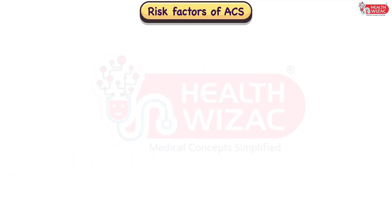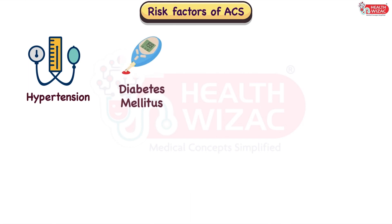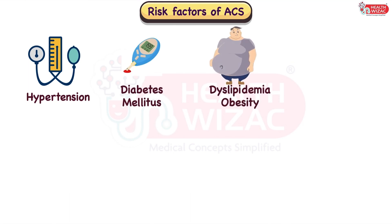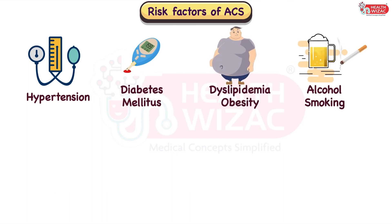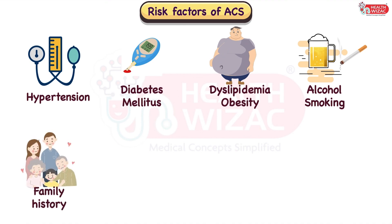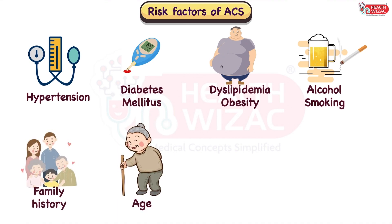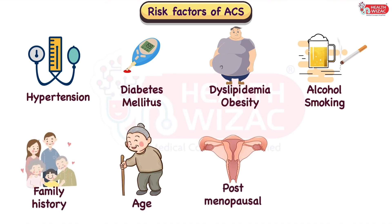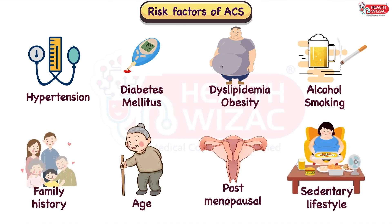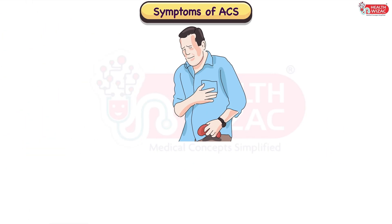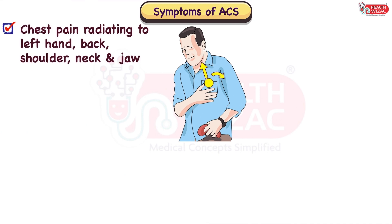The risk factors associated with acute coronary syndrome include hypertension, diabetes mellitus, dyslipidemia, obesity, alcohol and smoking, family history, age, postmenopausal state, and sedentary lifestyle. Coming to symptoms of acute coronary syndrome, the patient usually presents with chest pain radiating to the left hand, back, shoulder, neck, and even jaw.